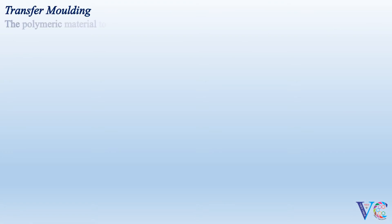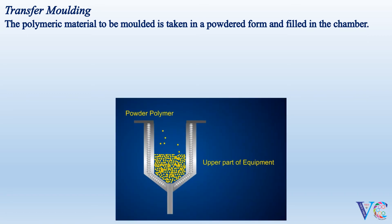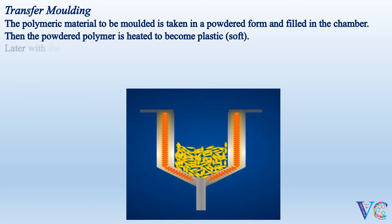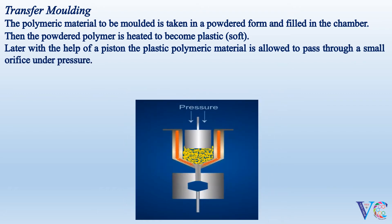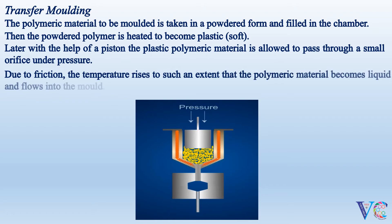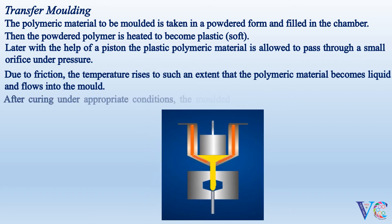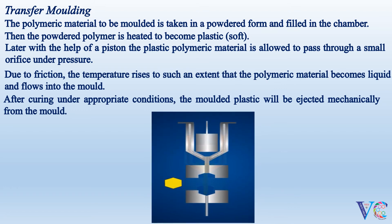In Transfer Molding, the polymeric material to be molded is taken in powdered form and filled in the chamber. The powdered polymer is heated to become plastic — that is, soft. With the help of a piston, the plastic polymeric material is allowed to pass through a small orifice under pressure. Due to friction, the temperature rises to such an extent that the polymeric material becomes liquid and flows into the mold. After curing under appropriate conditions, the molded plastic is ejected mechanically from the mold.